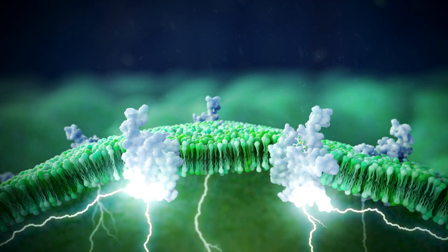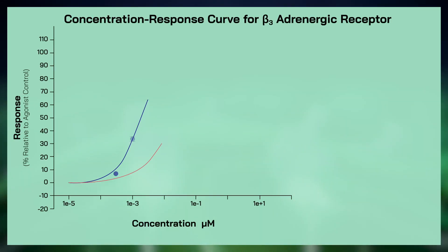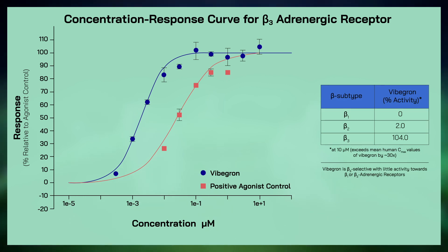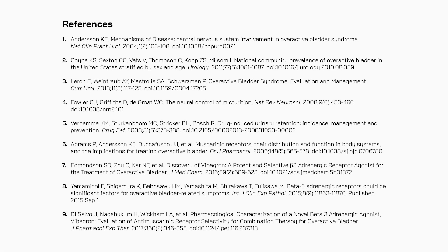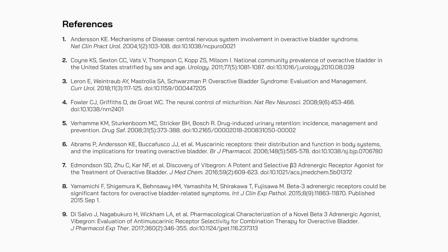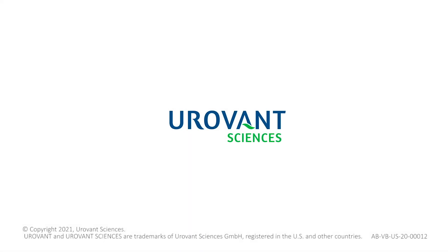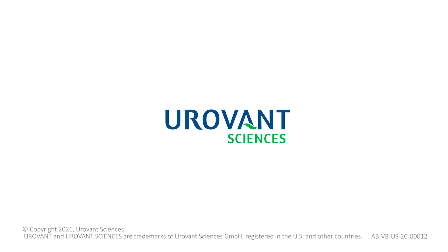Non-clinical data demonstrates that Vibegron possesses suitable drug properties, such as beta-3 selectivity and a long half-life. Urovant Sciences continues to develop and commercialize innovative therapies for urologic conditions.